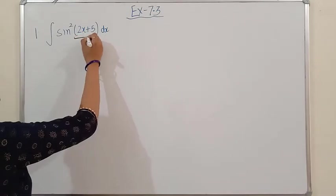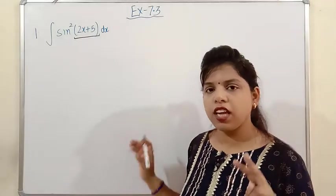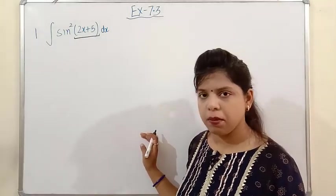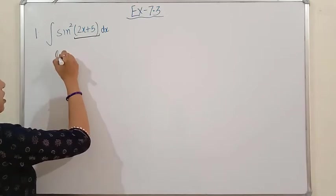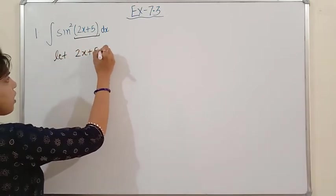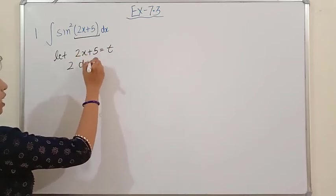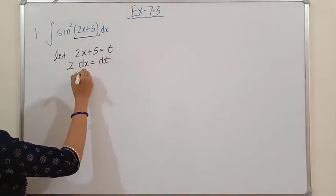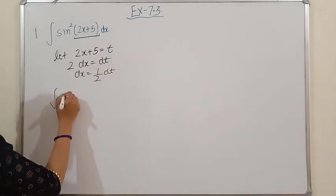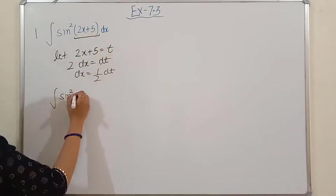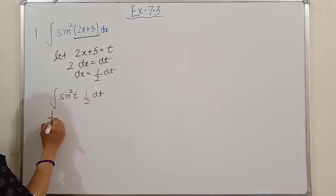The variable here is not a single variable, so this exercise is actually a combination of the previous exercise. In the previous exercise we used the substitution method. So first, let's suppose 2x+5 = t. Differentiating both sides: dx comes out, dt comes out, so dx = (1/2)dt. We put this value in the equation: sin²(2x+5) becomes sin²(t) and dx becomes (1/2)dt.